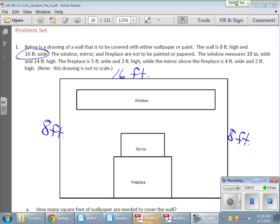Now I'm already starting to think about formulas and rectangles and things like this—it's a 16 by 8 rectangle. The window, mirror, and fireplace are not to be painted. That's important. The window measures 18 inches wide and 14 feet high. Now that is very interesting because if it's 14 feet high...